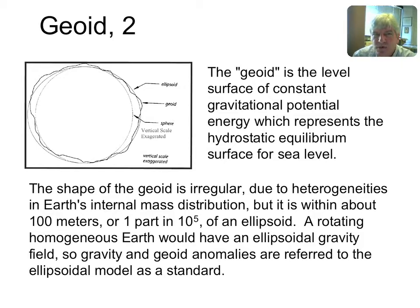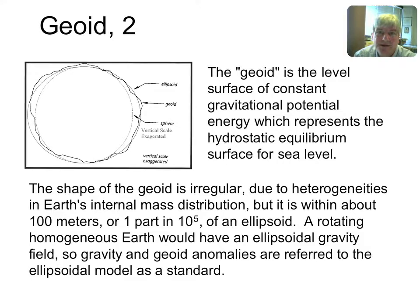The geoid is simply a level surface — a surface on which gravitational potential energy is constant. It is that particular surface representing the hydrostatic equilibrium surface for sea level, the interface between the ocean and the atmosphere. If the wind ceased to blow, the currents ceased to flow, and we could get rid of the tides, the ocean-atmosphere interface would come to rest on a level surface, and that's what we call the geoid. Its shape is irregular because mass distribution inside the Earth is irregular, but it's within about one part in 10^5 of being a perfect geometric ellipsoid.